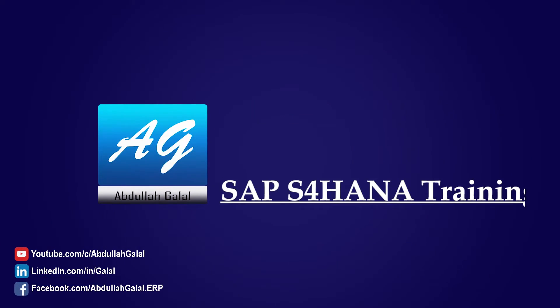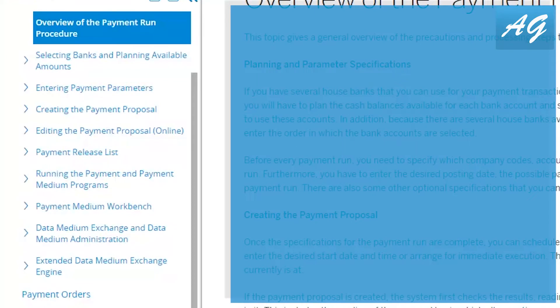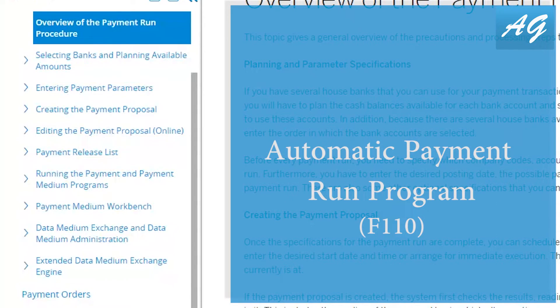Today I'm going to explain how to execute the automatic payment run, which is a process we use to run multiple outgoing payments to vendors at the same time. As usual, I'm also going to add some insights and configuration tips. In the last video I explained how to post supplier invoices, and today I'm going to explain how to pay these invoices. The video today is going to cover the automatic payment run program.